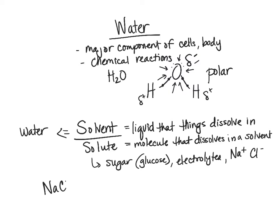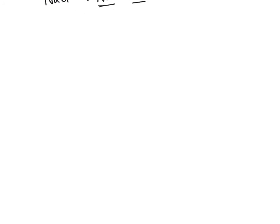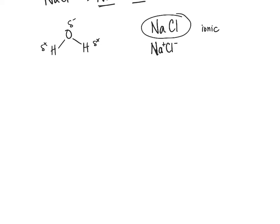If we took salt — our table salt, which is NaCl — and we put it into water, we see the sodium separate from the chloride. We have a positive sodium and a negative chloride. Remember what kind of bond NaCl is — it's an ionic bond. An ionic bond just means we have our very positive ion sitting right next to our very negative ion. They don't actually share any electrons; they're just our positive and negative ions sitting very close to each other.